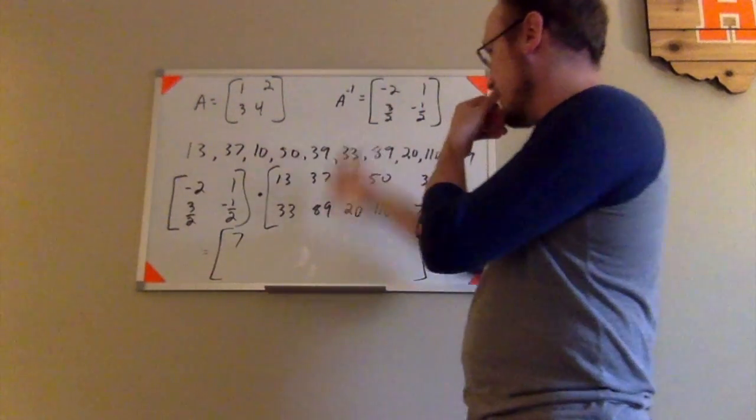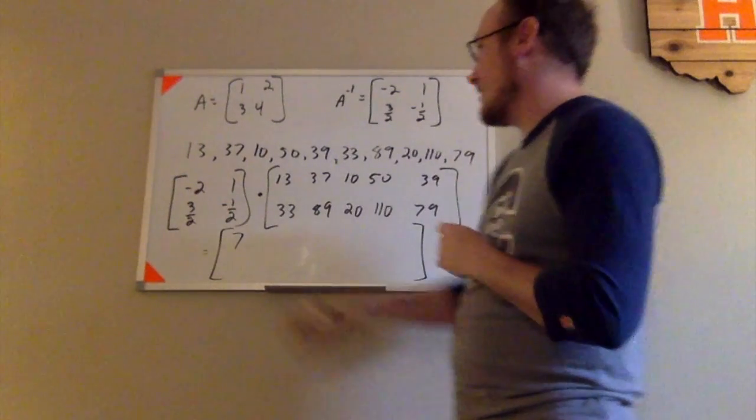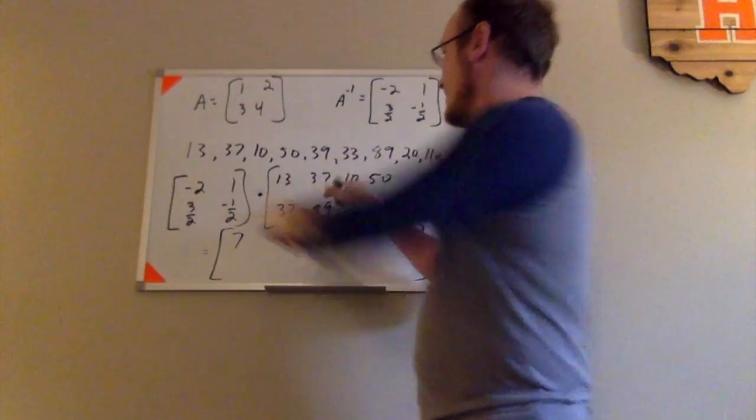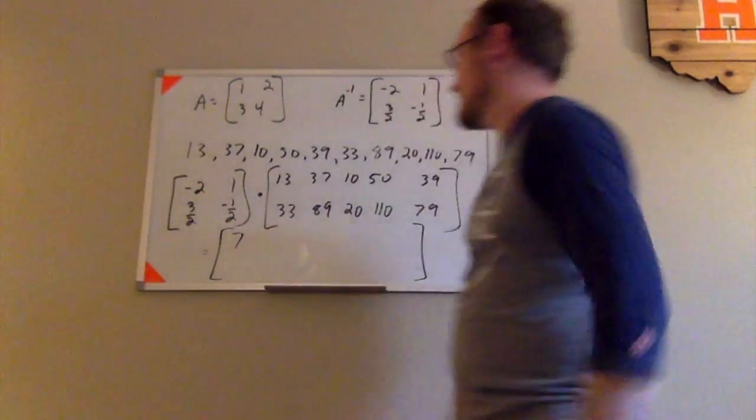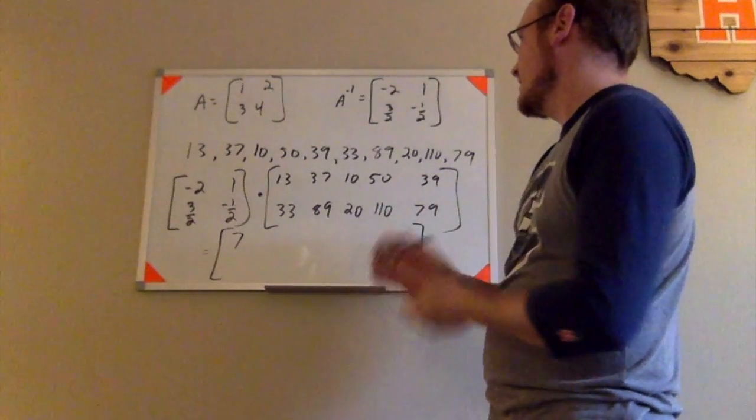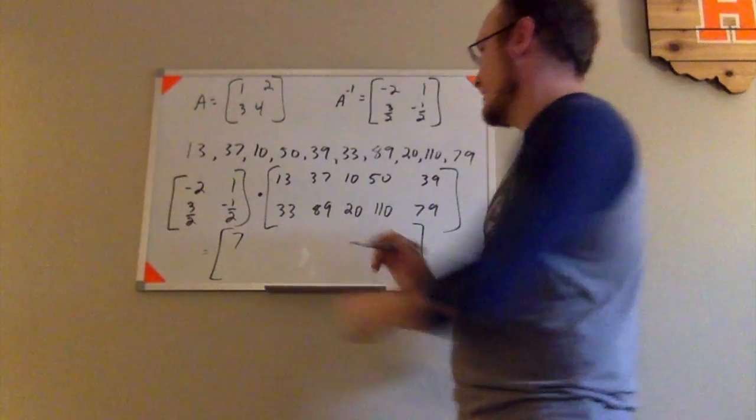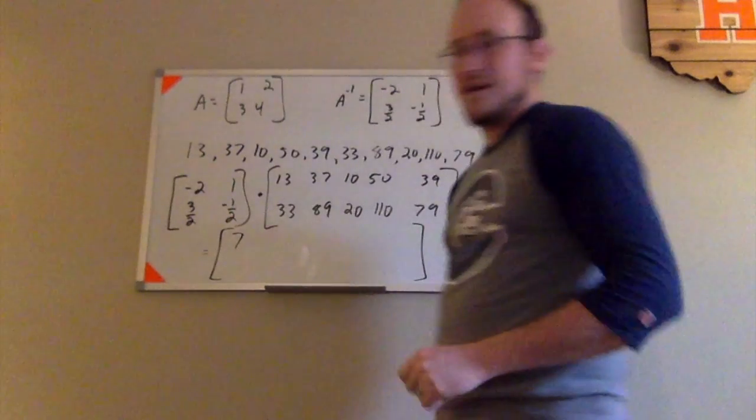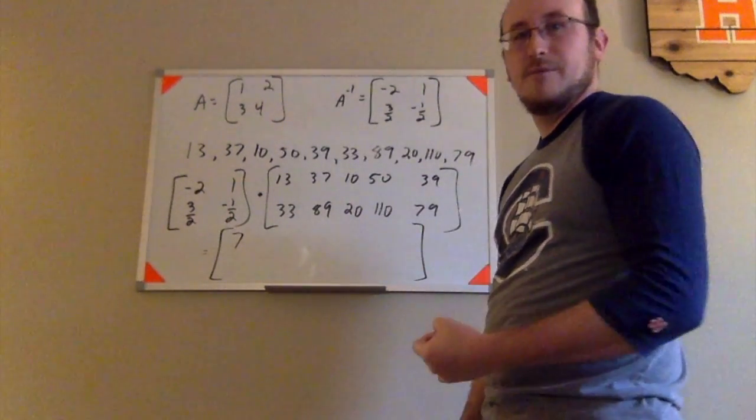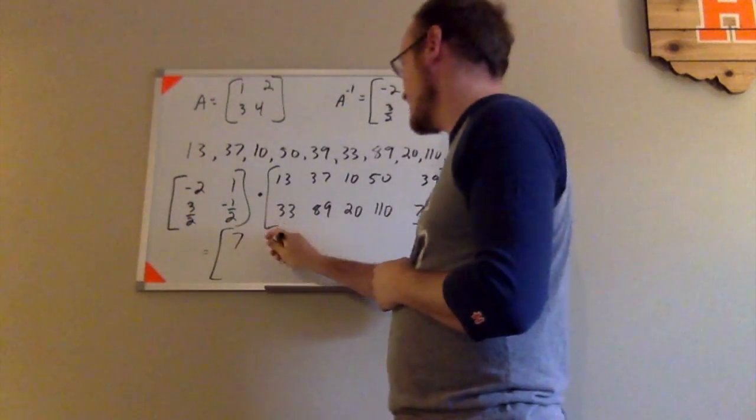Again, keeping with the first row, moving over to the second column there, I have negative 2 times 37, which would be negative 74. And 1 times 89, which is 89. Negative 74 and 89 makes 15.